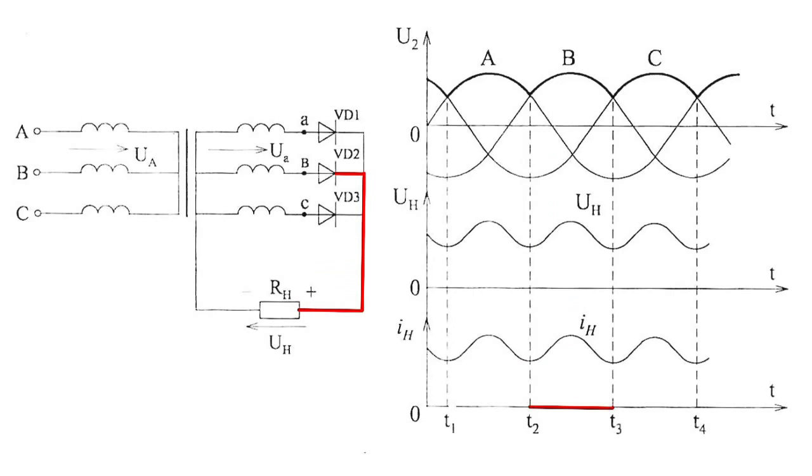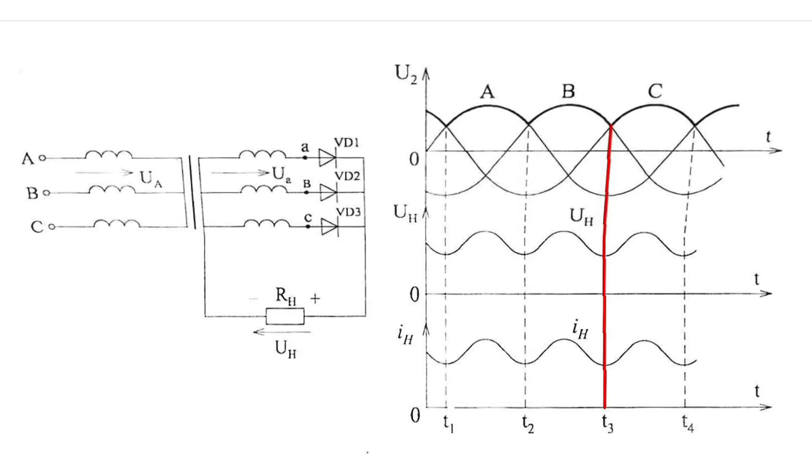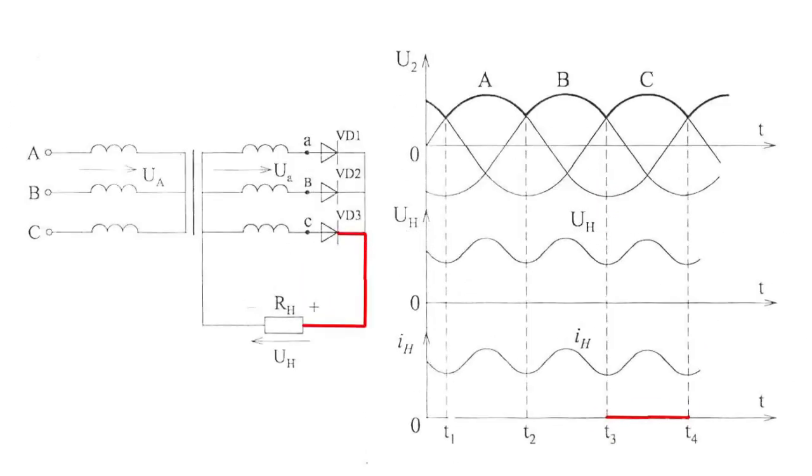At T3 moment, diode switches. VD2 diode closes while VD3 diode opens. VD3 diode switches on within the interval T3 to T4. Phase C powers the load resistance.